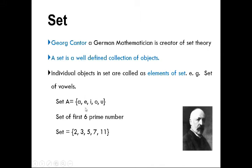So the set of vowels equals {a, e, i, o, u} and all the elements in a particular set are kept in brackets. A second example: the set of the first six prime numbers would be {2, 3, 5, 7, 11...}. Prime numbers are those numbers which are divisible only by themselves and by one.